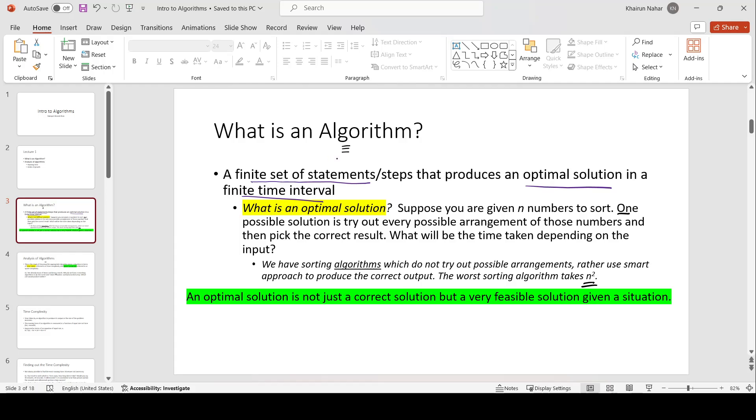What is an algorithm? Formal definition of an algorithm is, it is a finite set of steps or statements that produces an optimal solution in a finite time interval. So there are three parts of this definition. First, it must contain some specific number of steps. Second, must produce an optimal solution. Now what is an optimal solution?